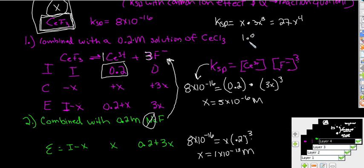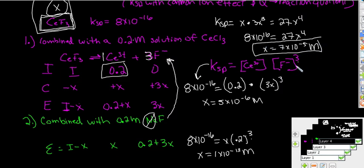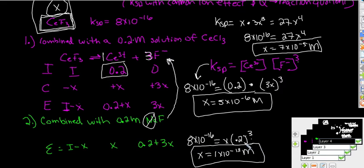So we have 8 times 10 to the negative 16th equals 27x to the fourth. Multiply that all out. And you'll find that x equals 7 times 10 to the negative 5th. So this is just in pure water. Notice right here, the molar solubility when you added the cerium ion didn't really affect it nearly as much as when you added the fluoride ion. But if you look at both of these, you see that it should make sense, it should match up because both of these new molar solubilities are less than if it was in pure water. So we have the common ion effect and we've shown it mathematically that it is actually working.